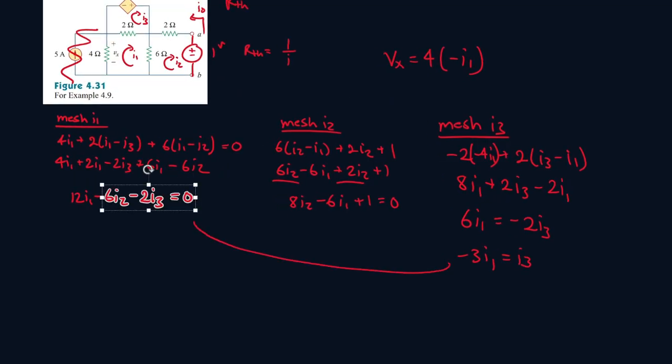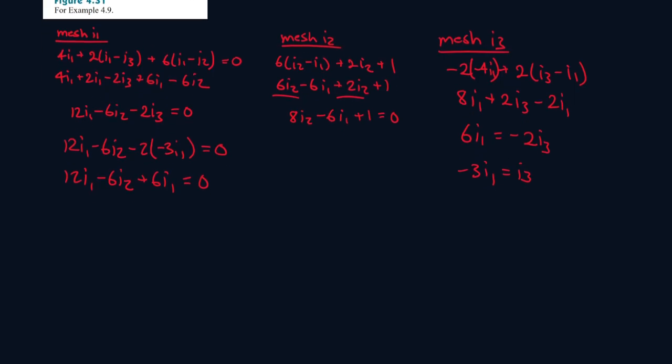Now let's plug in I3 into here. So it will be 12I1 minus 6I2 minus 2 minus 3I1 equals 0. So 12I1 minus 6I2 plus 6I1 equals 0. So 12 plus 6, that's 18I1. Bring the 6 to the other side, so 6I2. Now let's isolate for I2. So 18 divided by 6, that's 3I1 is equal to I2.